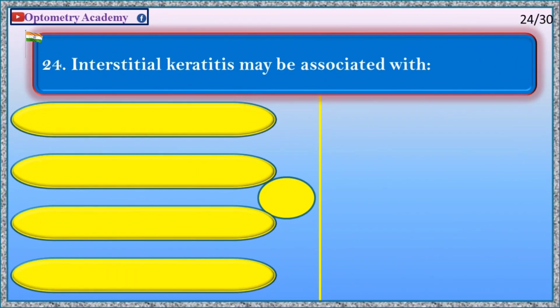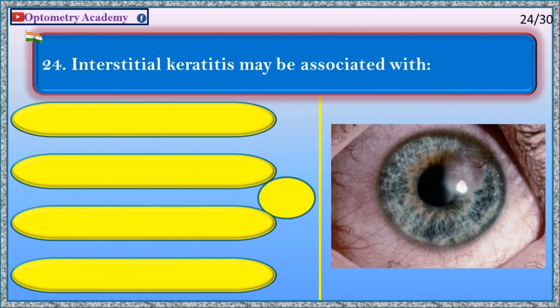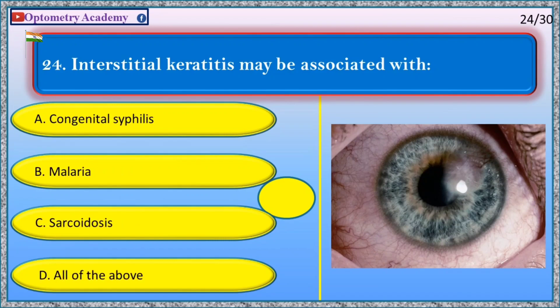Interstitial keratitis may be associated with: A. Congenital syphilis, B. Malaria, C. Sarcoidosis, D. All of the above.